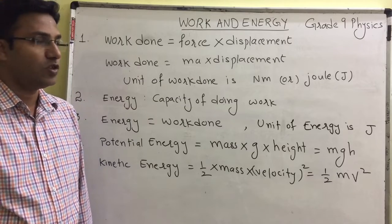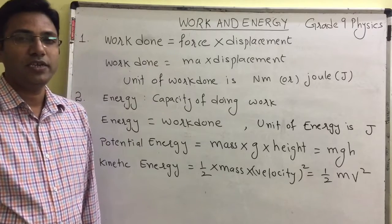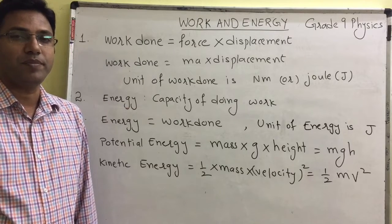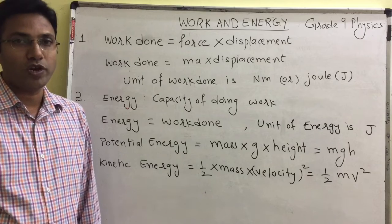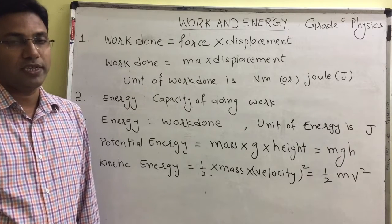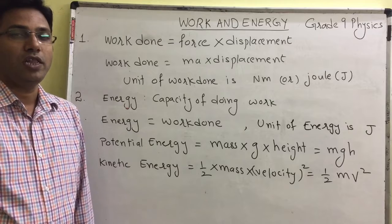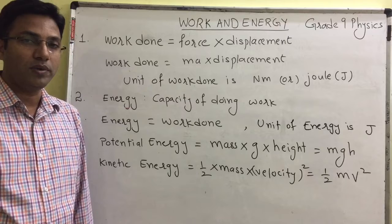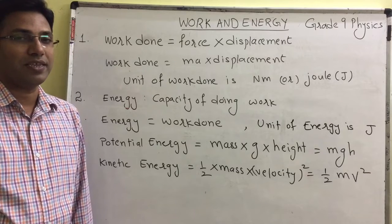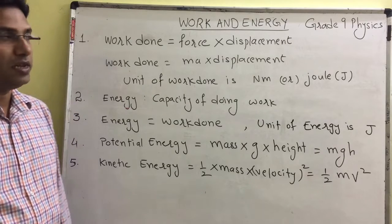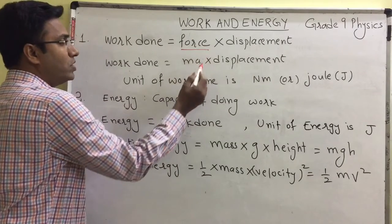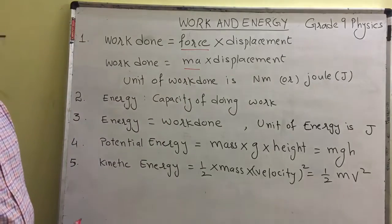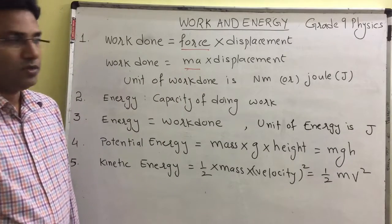Let us see the first topic: work. Work is said to be done when the object moves on the application of force. That means when we apply some force on any object and the object moves, then we can say that work is done. Therefore the formula of work is force into displacement. Sometimes in the problems force will not be given, but mass and acceleration will be given. In that case, in place of force we write m×a, that means work done is equal to m×a into displacement.